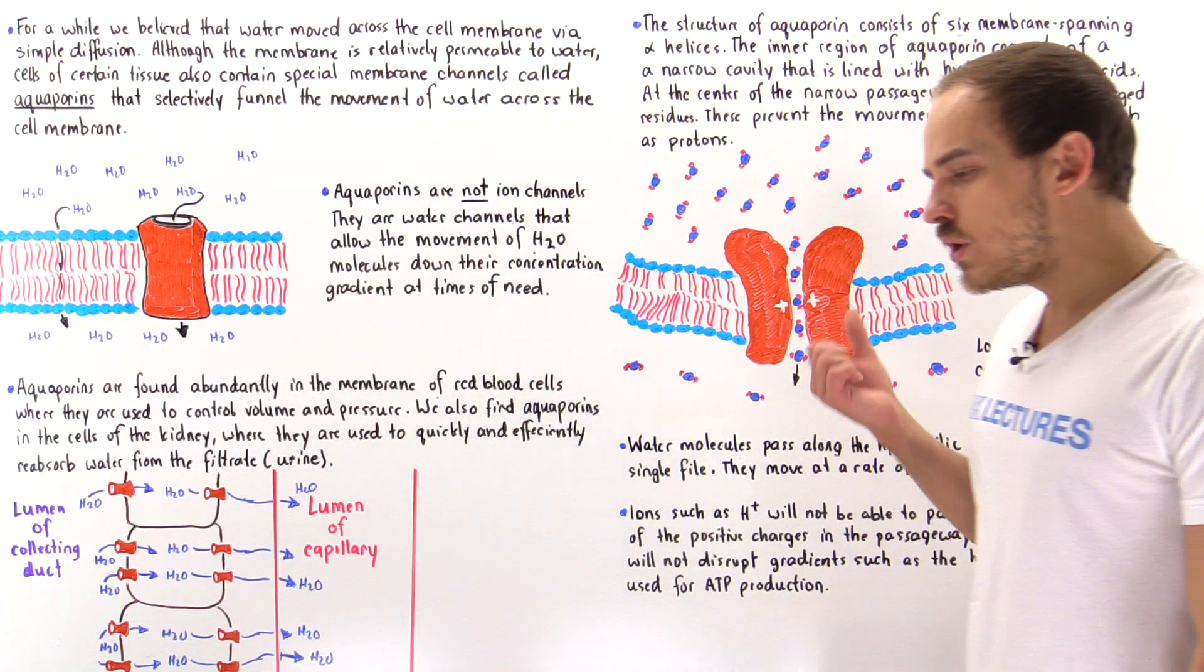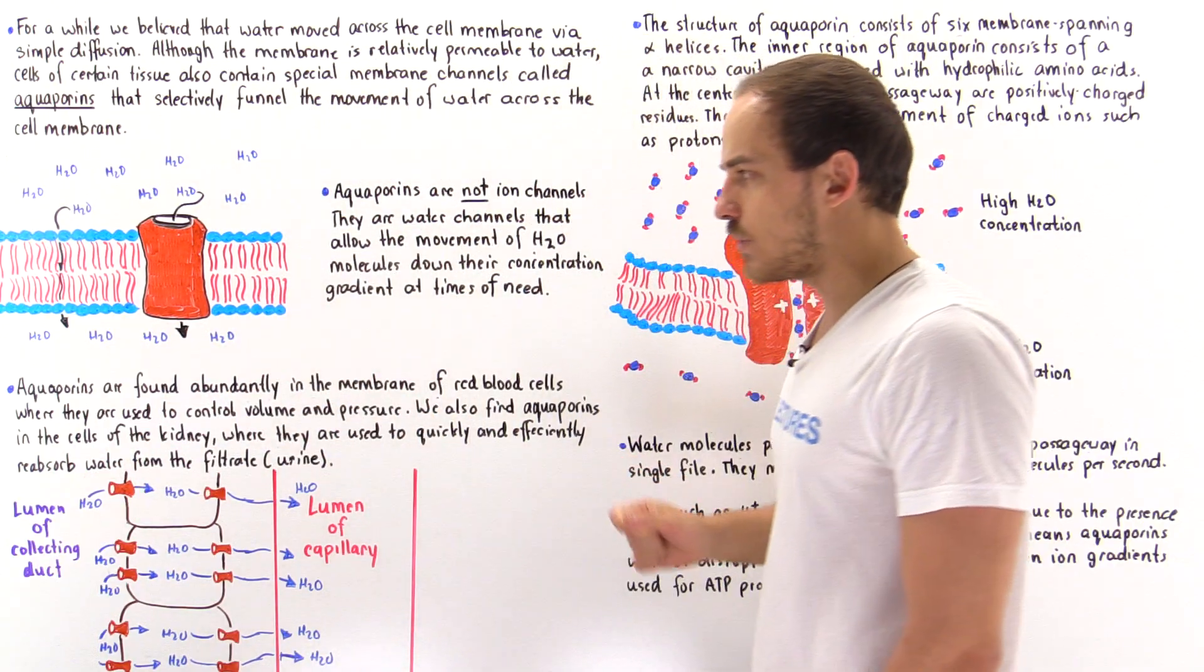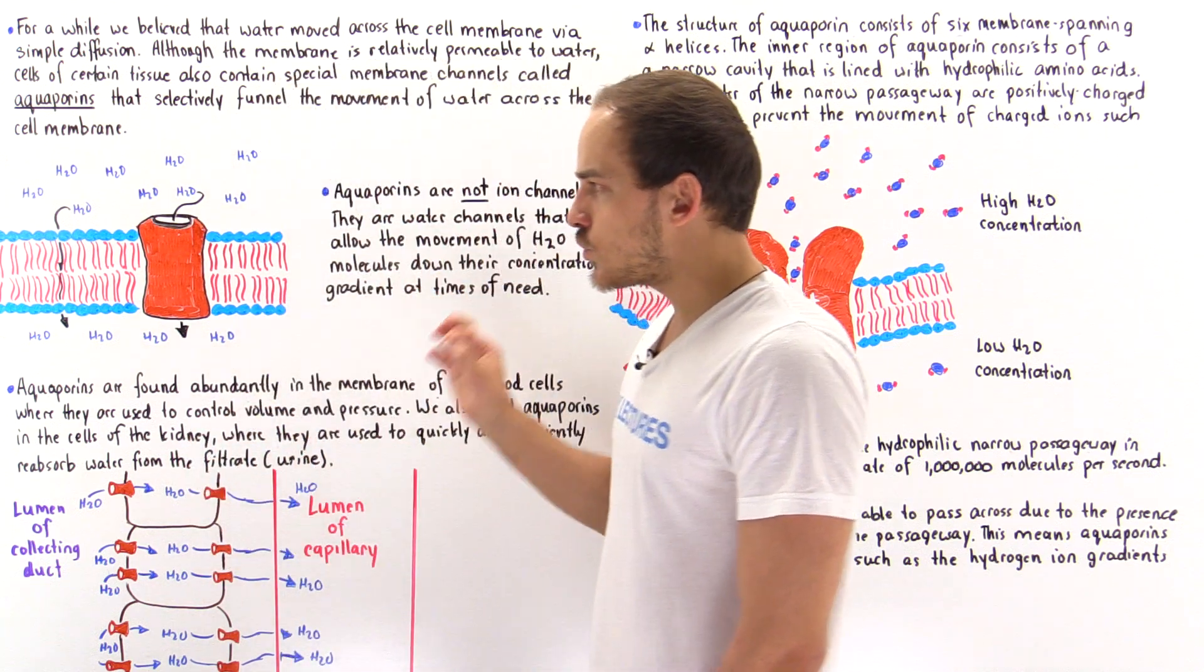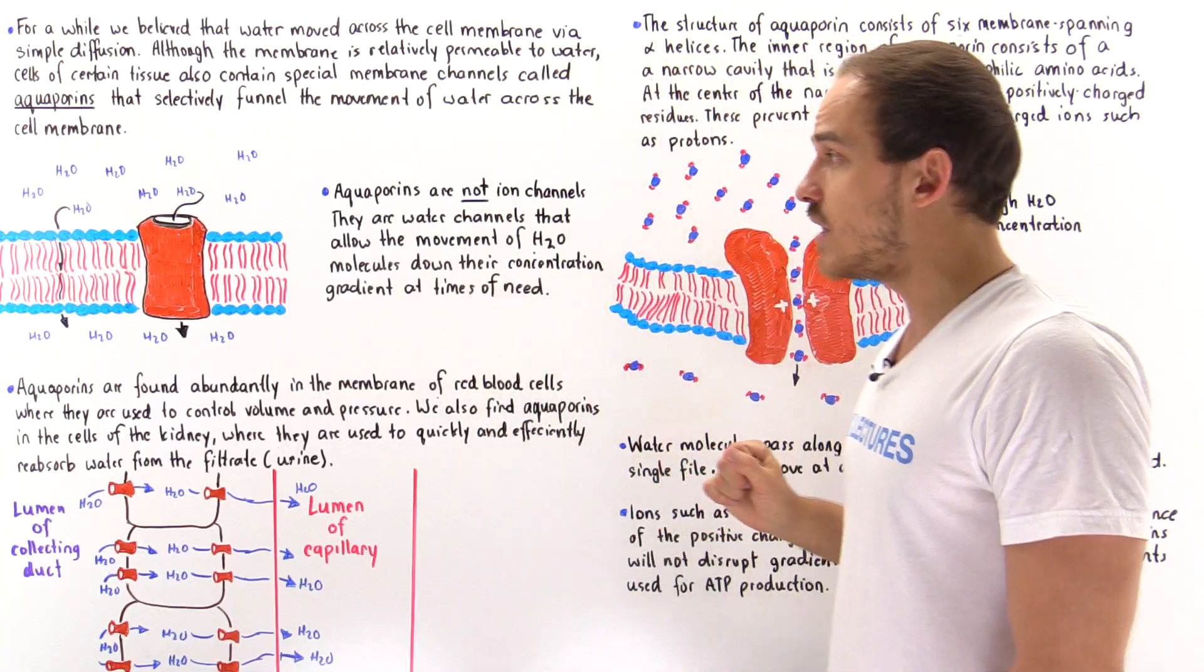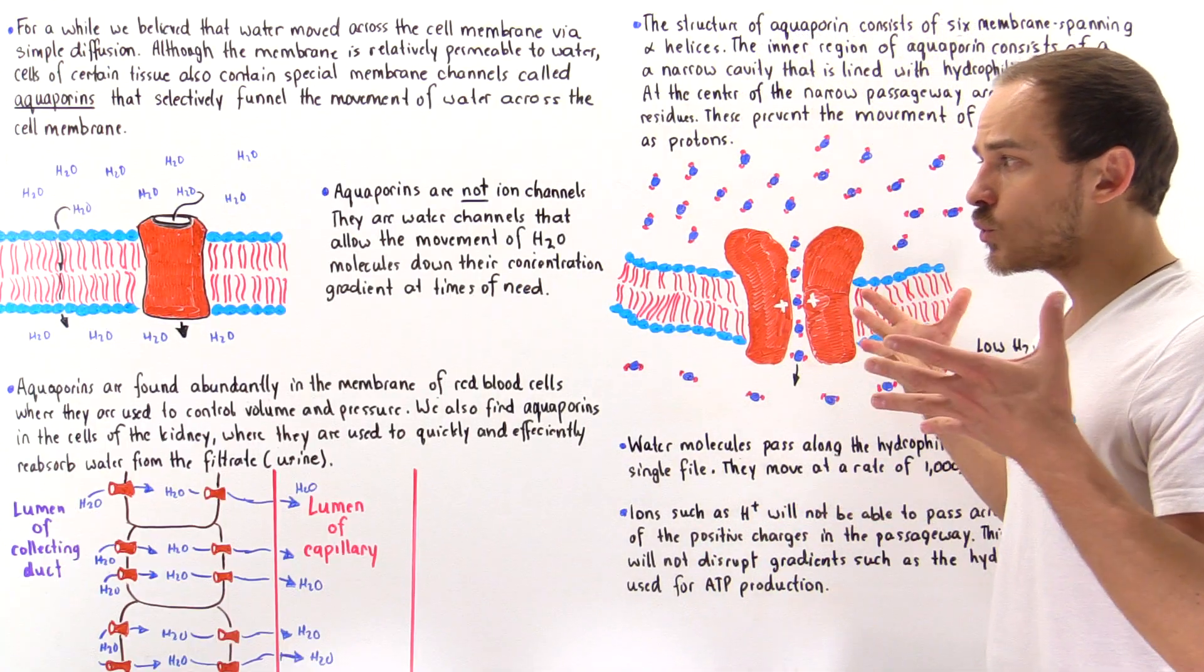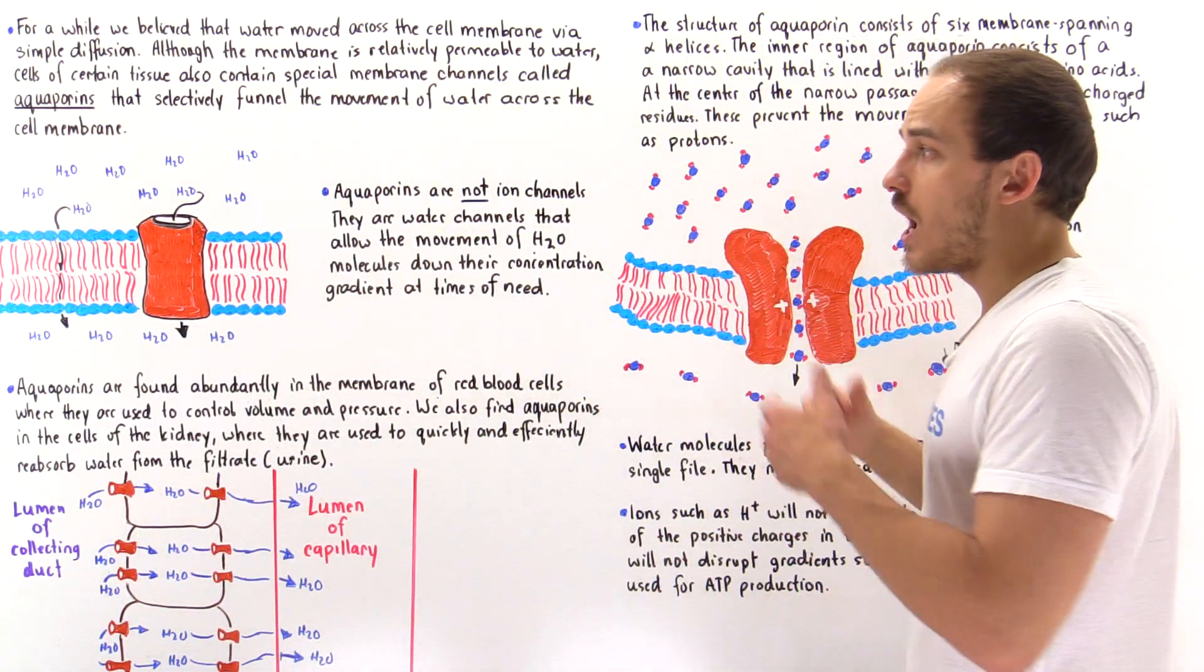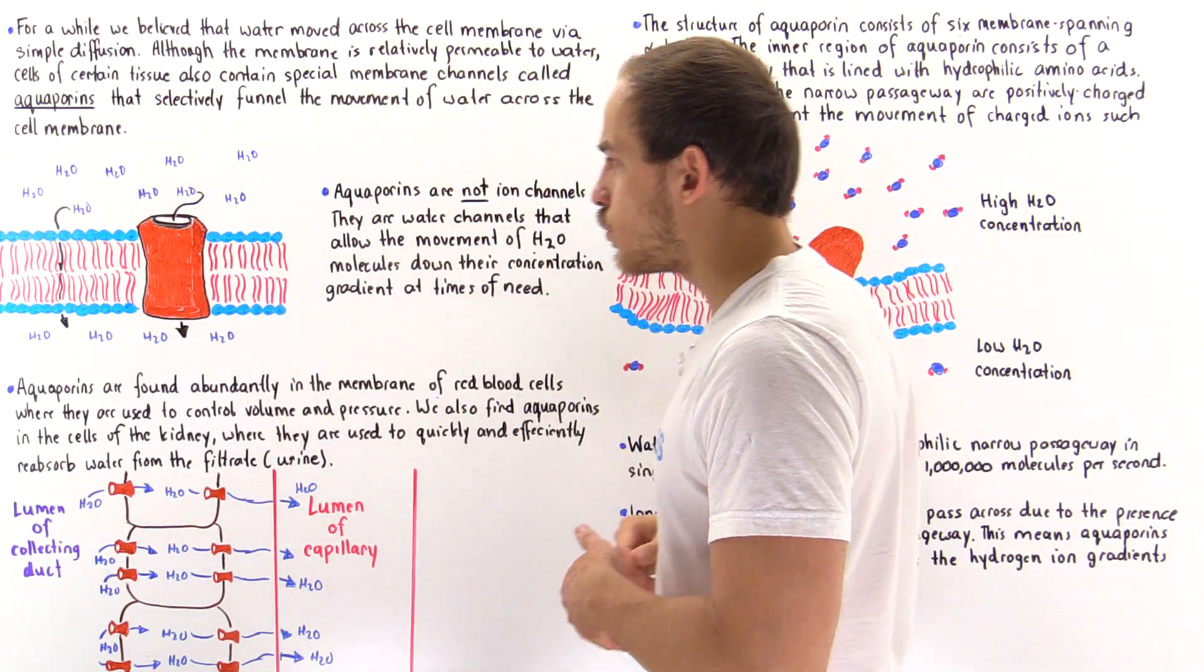When would our cells of the body need to take the water and move it to the other side of the cell membrane very quickly? One example is when we produce tears. Tear production basically involves being able to release the water very quickly, and the same thing is true for producing saliva. Those cells of our body actually use aquaporins to release the water as quickly as possible, and the rates at which the water travels through these aquaporins are much higher than the rates at which water actually moves through that membrane.